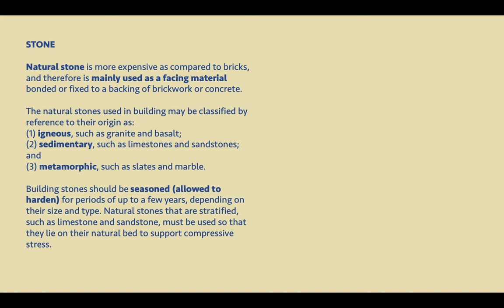The associated reading starts with a series of walling materials beginning with stone. It discusses natural stone as an expensive material that has now been relegated mostly to a facing material. However, stone can still be used in construction and you should know the basic types of stone and how these are seasoned for use in building construction.